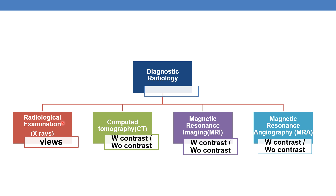Whenever we code X-rays, the first point that must be taken into consideration is views — number of views. Before assigning a CPT for CT or MRI or MRA, we must look at whether it is with contrast, without contrast, or without contrast followed by contrast. We must consider whether a contrast dye is administered or not.